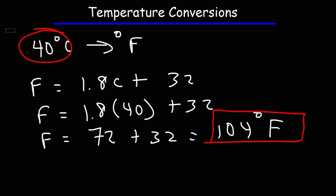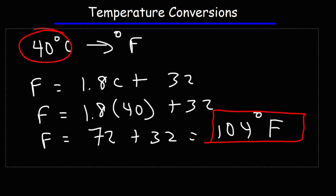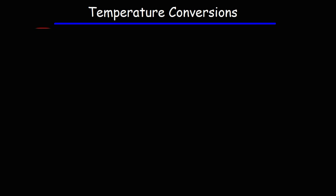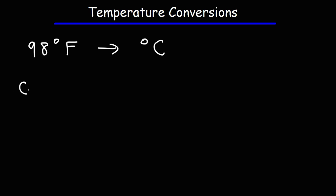So now you know how to convert Celsius to Fahrenheit. But let's talk about how we can convert Fahrenheit to Celsius. Let's say we have a temperature of 98 degrees Fahrenheit. The formula we're going to use is: the Celsius temperature is equal to the Fahrenheit temperature minus 32, divided by 1.8.